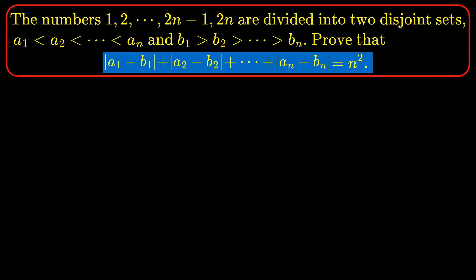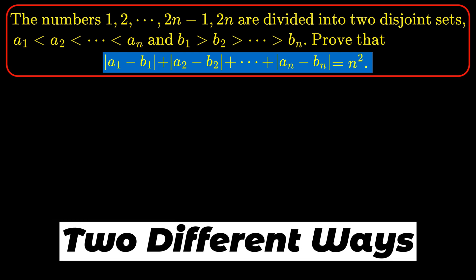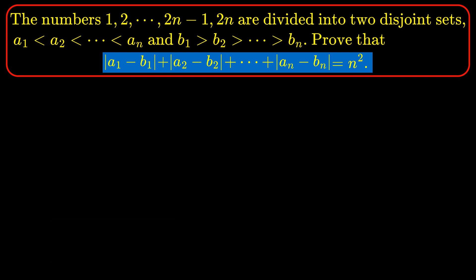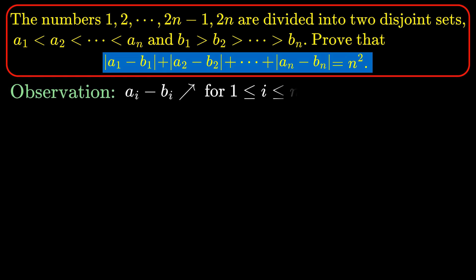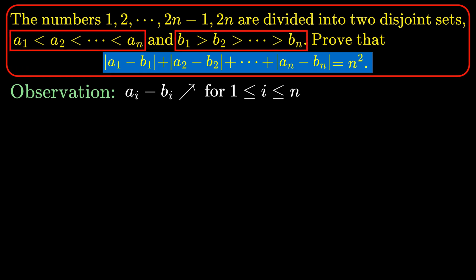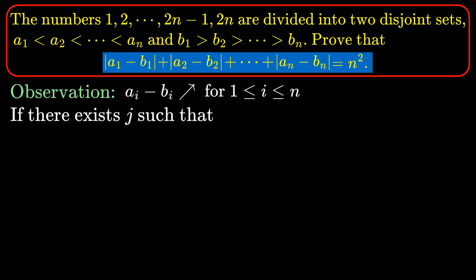In this video, I will be showing you two different ways to prove this identity. So let's start proving. The main observation is that a_i minus b_i is getting bigger as i runs from 1 to n, because the sequence a1, a2, up to an is increasing and the other sequence b1,